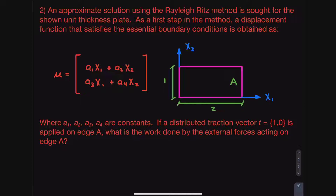You guys will actually see me calculate an integral by hand — I know it's very easy to just say 'take an integral' especially when using Mathematica. Question number two says an approximate solution using the Rayleigh-Ritz method is sought for a shown unit thickness plate. As a first step, a displacement function that satisfies the essential boundary conditions is obtained as U composed of U1 and U2, where A1, A2, A3, and A4 are all constants.